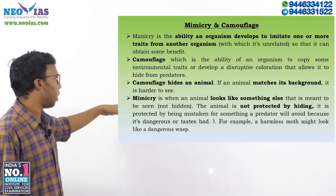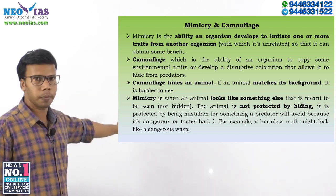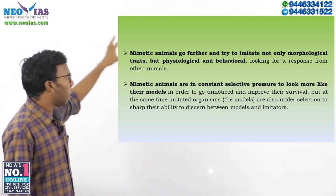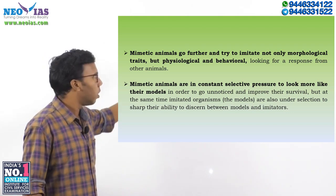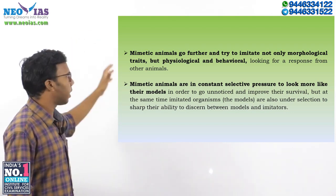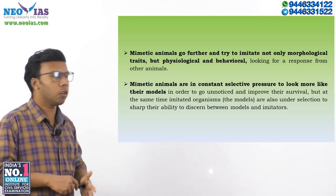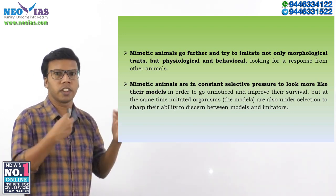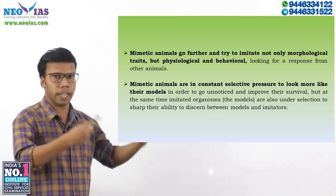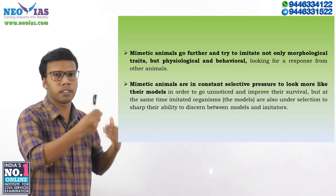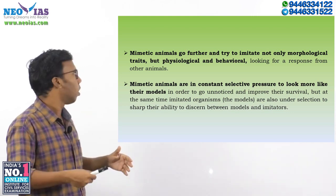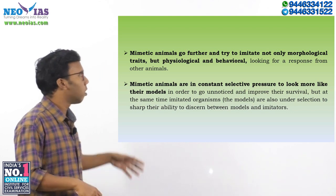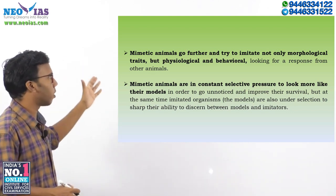For example, a harmless moth might look like a dangerous wasp — that is also an example of mimicry. Unlike camouflage, mimetic animals go further and try to imitate not only morphological traits but also physiological and behavioral traits, seeking a response from other animals. We can say that mimicry is an incredible evolutionary engine, because over time an animal adapts to look like another animal as part of the evolutionary process.